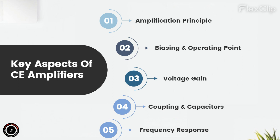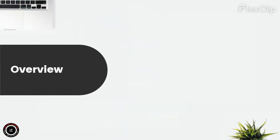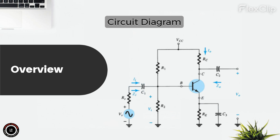These five key aspects encapsulate the fundamental principles and characteristics of common emitter amplifiers, making them a cornerstone of electronics and amplifier design. Let's move to the circuit diagram and input versus output plot explanation of the CE amplifier configuration. A common emitter, CE, amplifier consists of several components that serve specific purposes in the circuit. Each component plays a crucial role in achieving signal amplification.